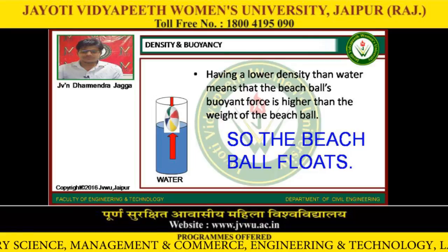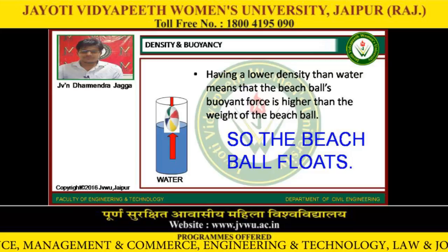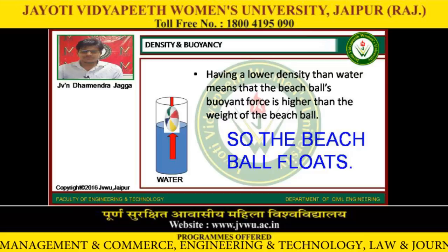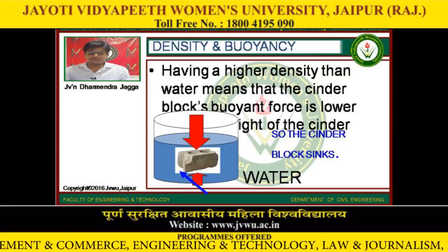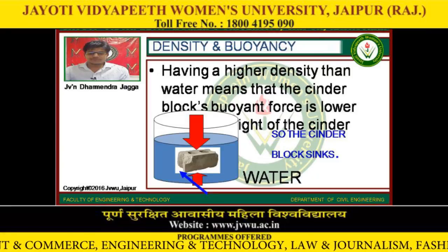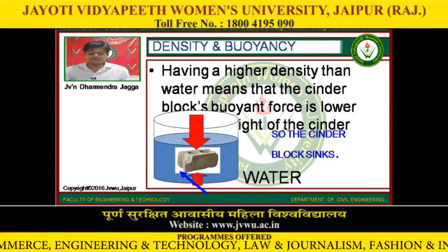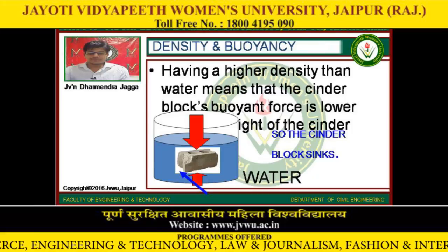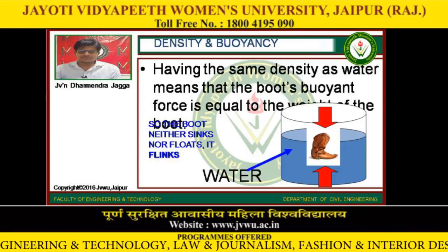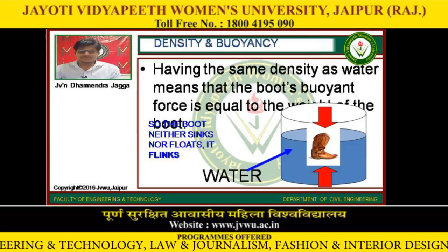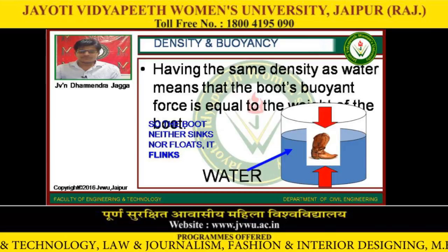Having a lower density than water means the buoyant force is higher than the weight of the beach ball, so the beach ball floats. Having a higher density than water means the buoyant force on the cinder block is lower than the weight of the cinder block, so the cinder block sinks. Having the same density as water means the buoyant force is equal to the weight of the boot, so the boot neither sinks nor floats — it suspends.